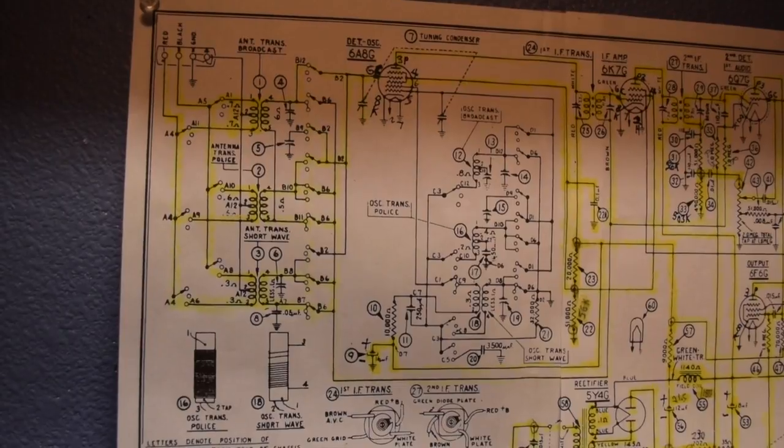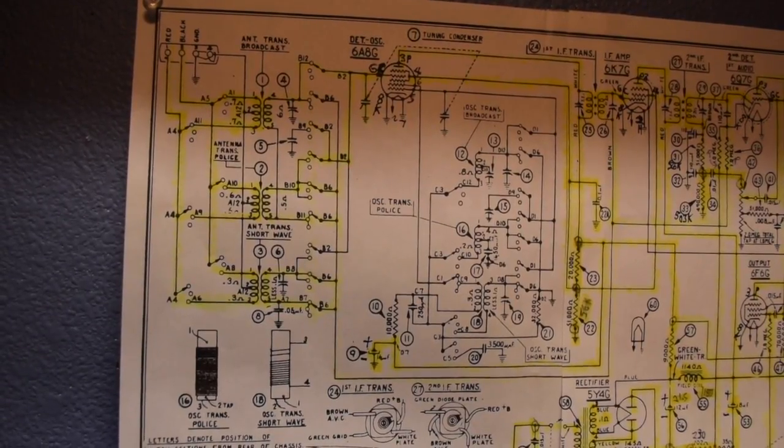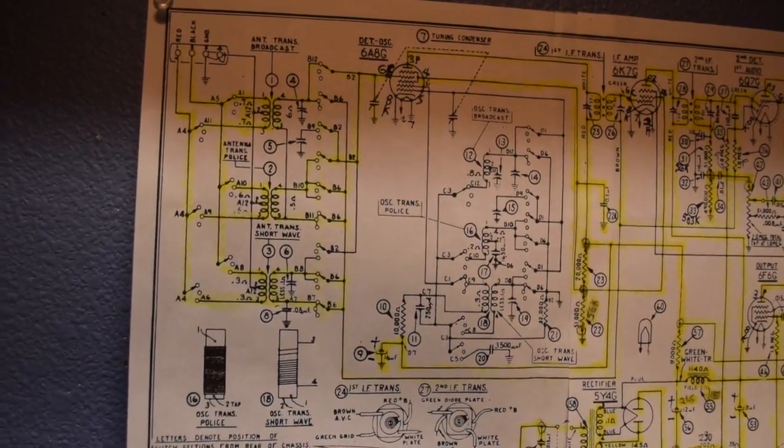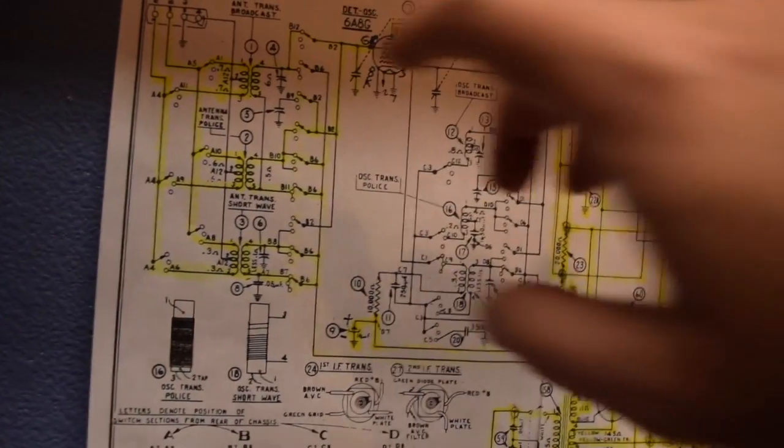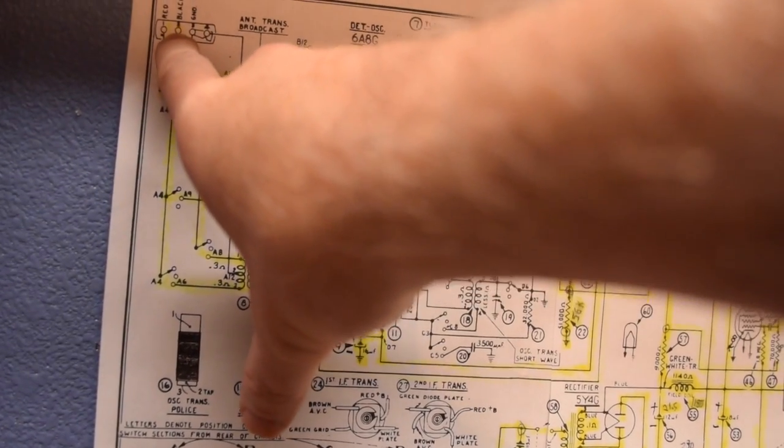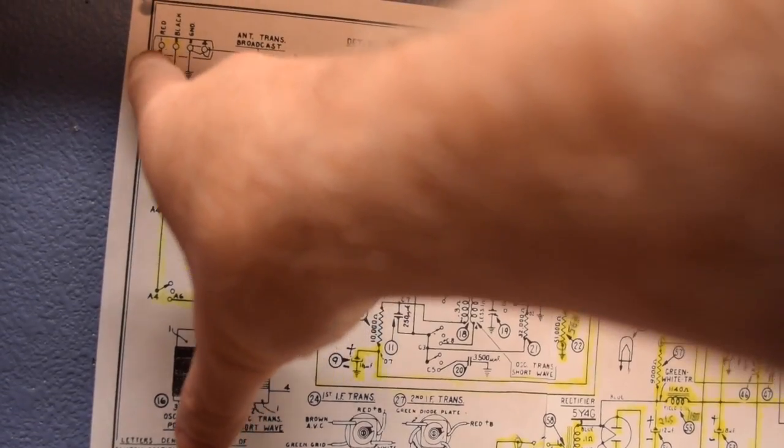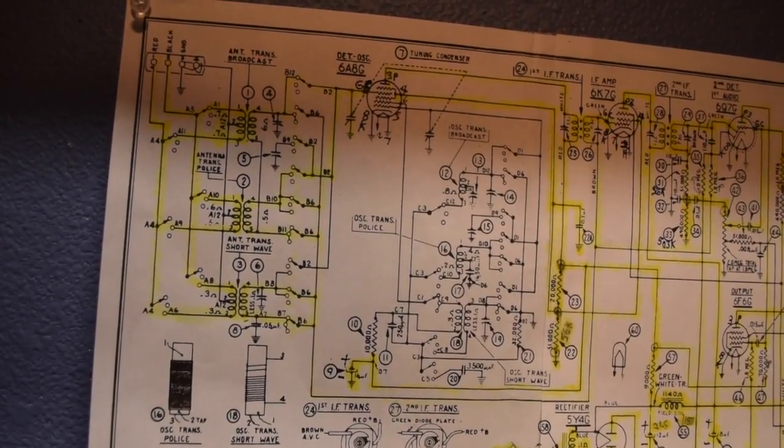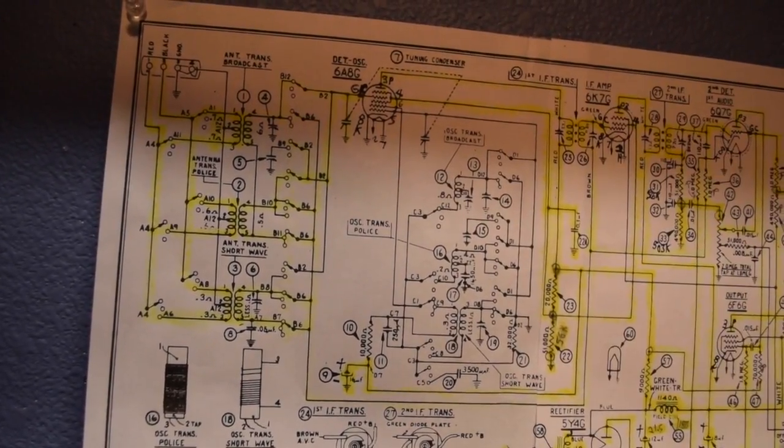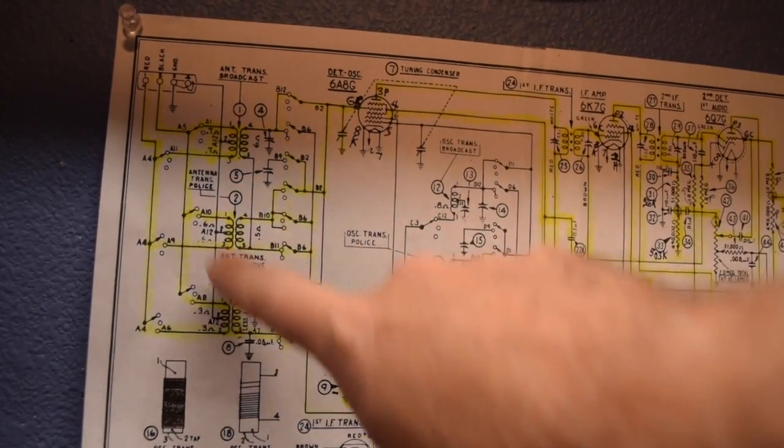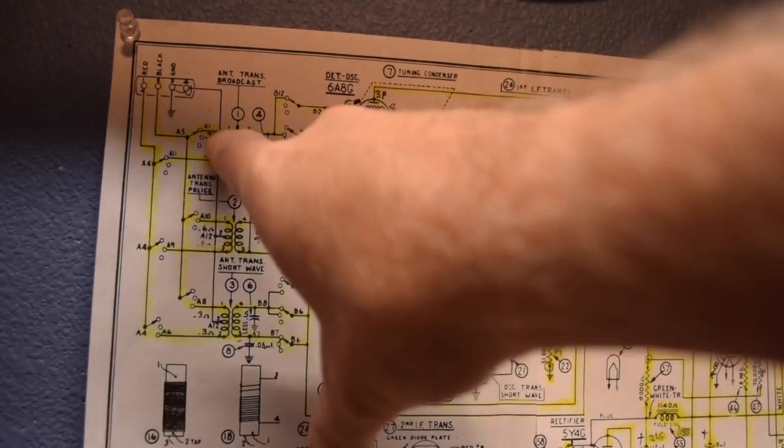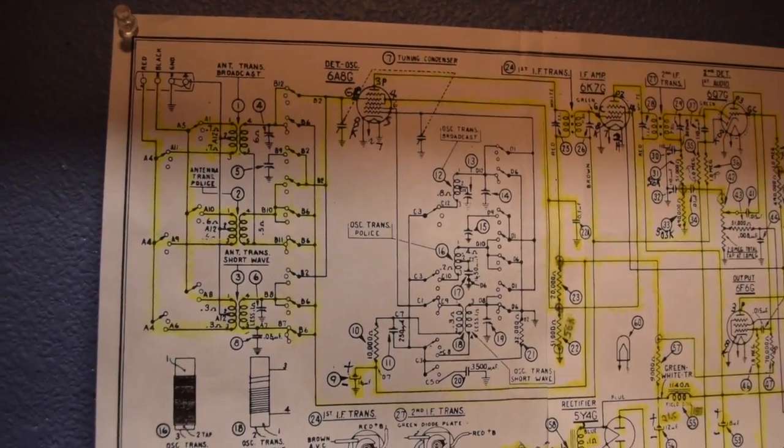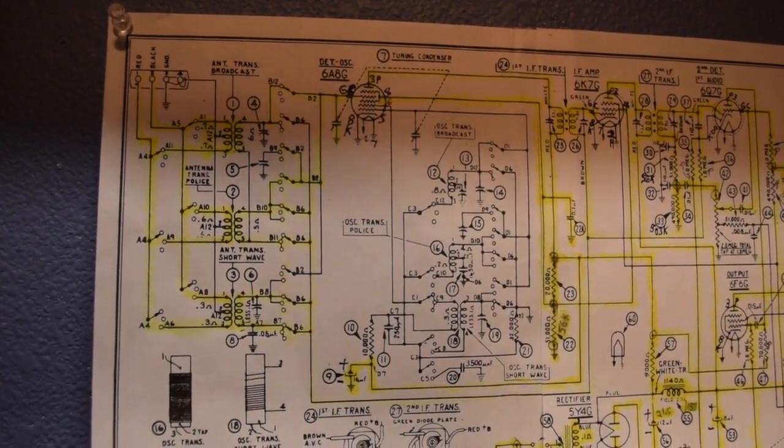So after studying the schematic a little bit, I determined that you can measure the input side of the antenna coils by putting your probes on the red and black or the one and two screw contacts on the antenna input on the back of the chassis. And by turning the band switch to the different bands, you can measure the sum of each of the coils. And I did that and all the input side of the antenna coils checked out.